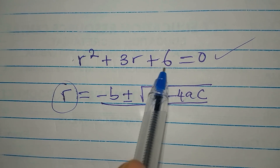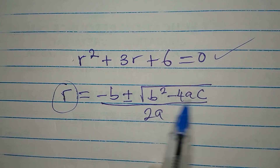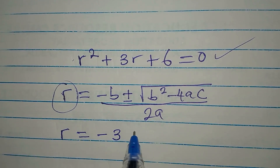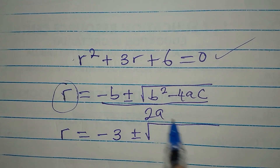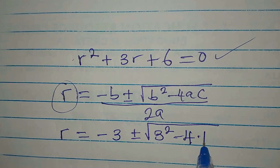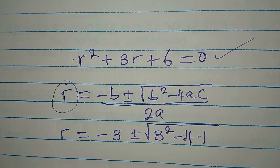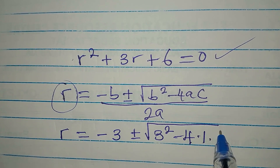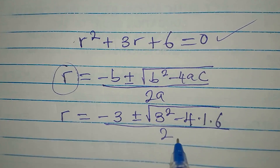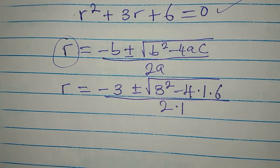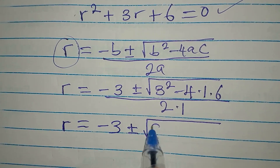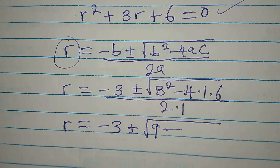Substituting into the formula, r equals minus 3 plus or minus square root of b squared which is 3 squared, minus 4 times a which is 1, times c which is 6, all divided by 2 times 1. This simplifies to r equals minus 3 plus or minus square root of 9 minus 24, divided by 2.